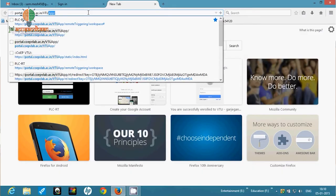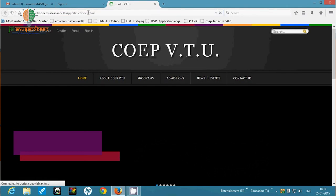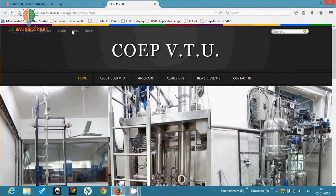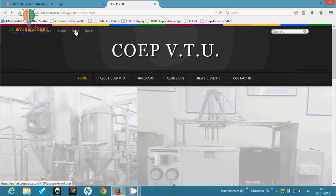I'll explain the process for doing experiments using the remote triggered laboratory. First of all, you need to get registered on the COEP Virtual Terminal Unit Portal. Just navigate using Google, type COEP VTU, and you will get the first link. Once you go there, you'll find the enroll tab. You need to enroll as a user.